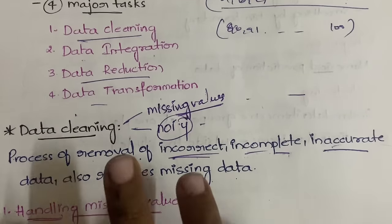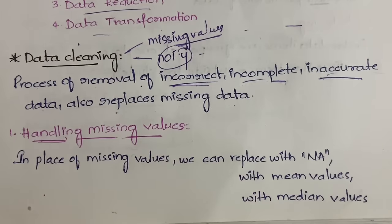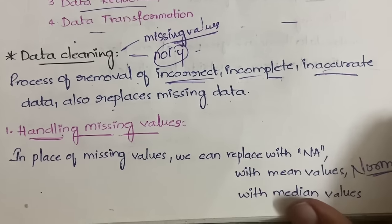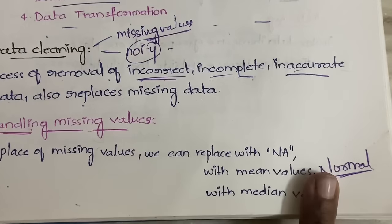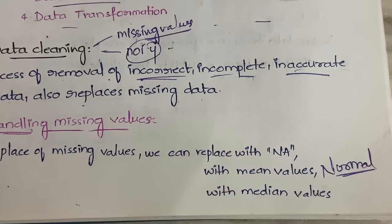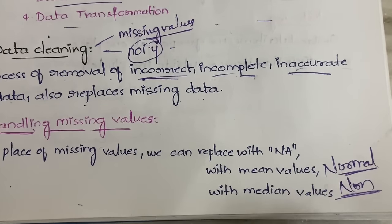For handling missing values, you can replace them with 'NA' (not applicable), or with the mean value — used when the data is normally distributed. You calculate the mean of the remaining data and substitute it in place of the missing value. You can also replace with the median value, which is used when data is non-normally distributed.